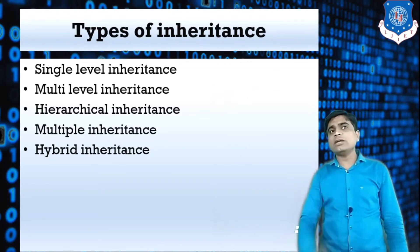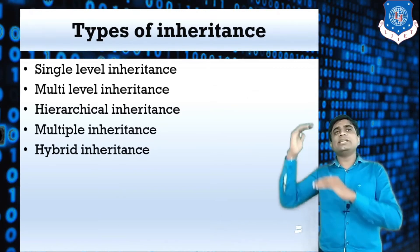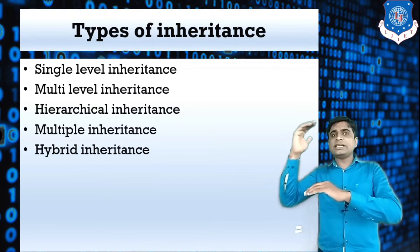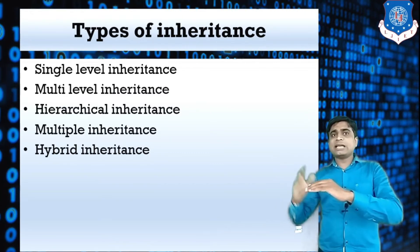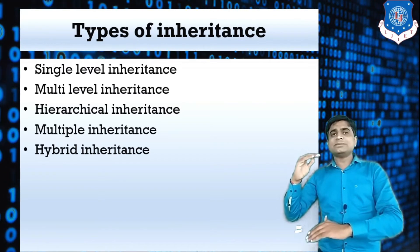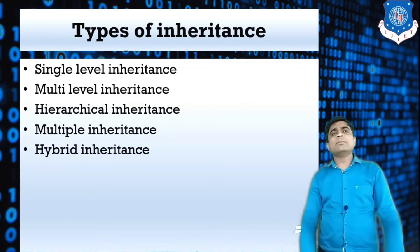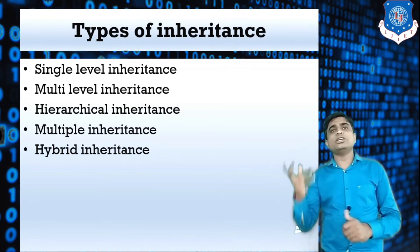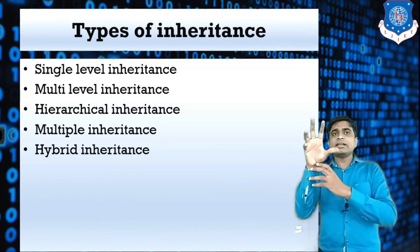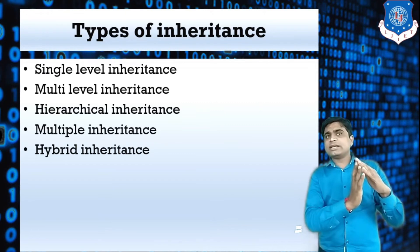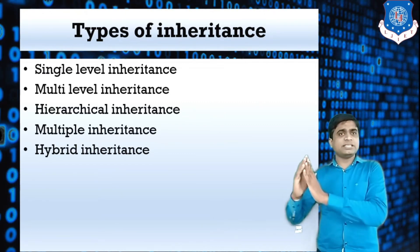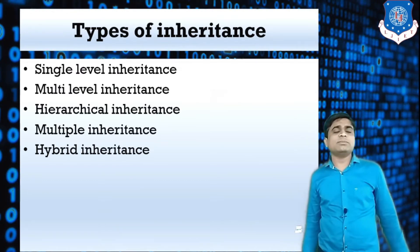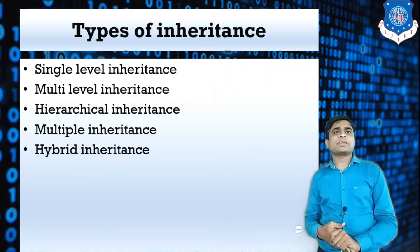In multi-level inheritance, there are three classes: class A, class B, and class C. Class A's data is accessible by class B, and class B's data is accessible by class C. This structure is known as multi-level inheritance. Next is hierarchical inheritance, which has a tree-type structure — one root node with two children, B and C. Both B and C can access the data of class A. This is called hierarchical inheritance.